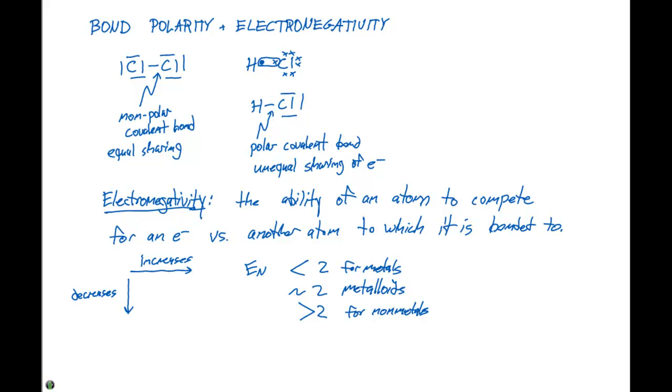So we can use these general trends to see how badly a particular atom wants that electron. If we come back to our HCl example here, we call this a polar covalent bond because there's unequal sharing of electrons. The reason is because the chlorine atom is more electronegative than the hydrogen atom.